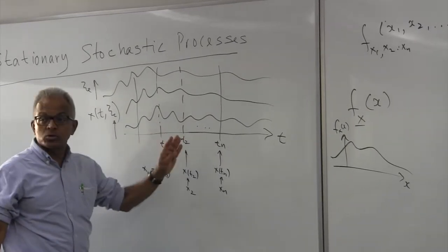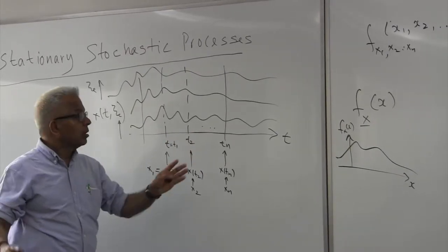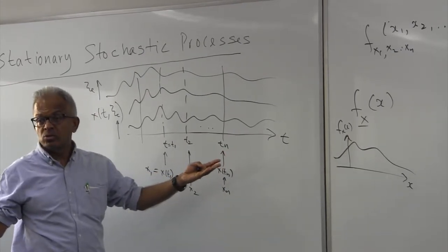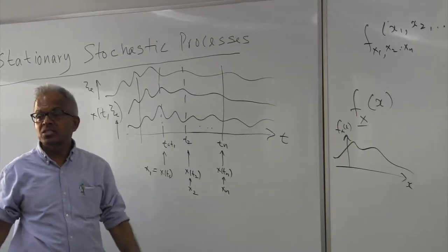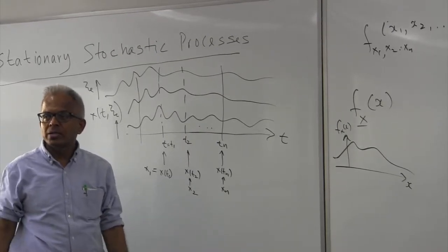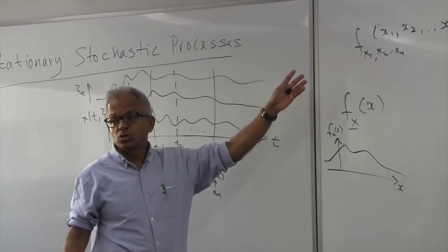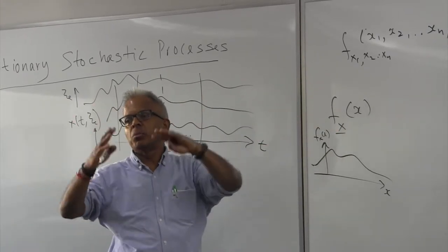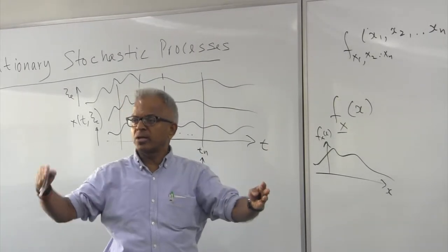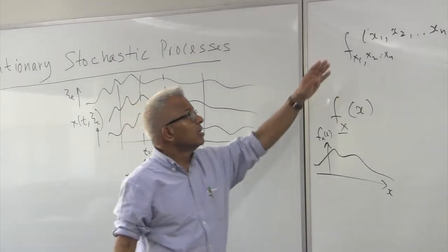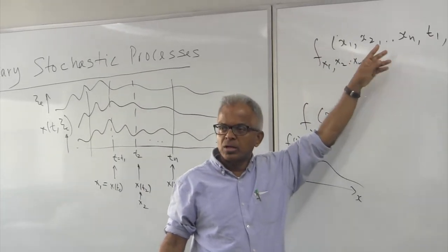But look at the job involved. You can take arbitrary t1 to tn and find the joint density function. What should be the value of n? You can say all values of n. If you know such a joint density function, then that's the complete characterization of the stochastic process. The joint density function is useful because from there you can find the marginal density functions: if you know the joint density function of x and y and integrate out y, you get the density function of x.